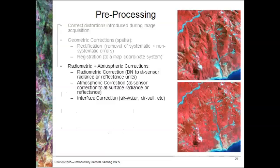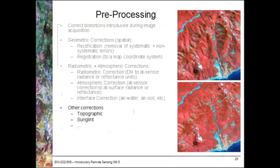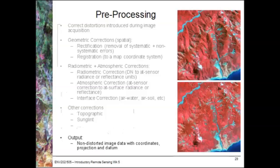Other corrections may consider interface corrections — for example, if we're working with an air-sea or air-soil interface. Additional corrections include topographic corrections like those shown in the examples on the right-hand side, and corrections for sun glint at the water surface. The output of pre-processing will give us non-distorted image data with coordinates, projection, and datum.